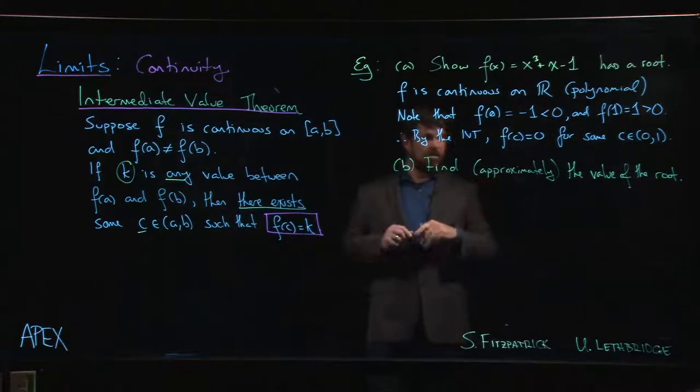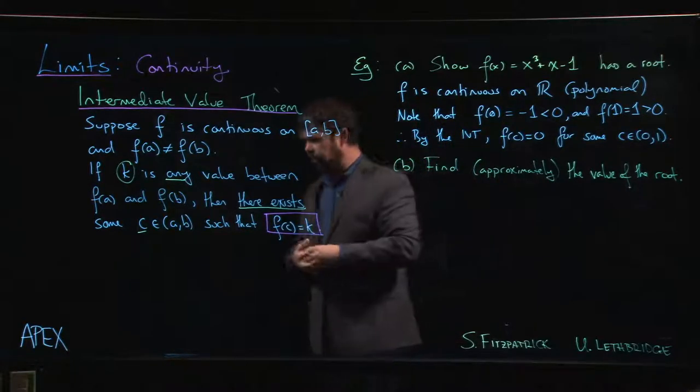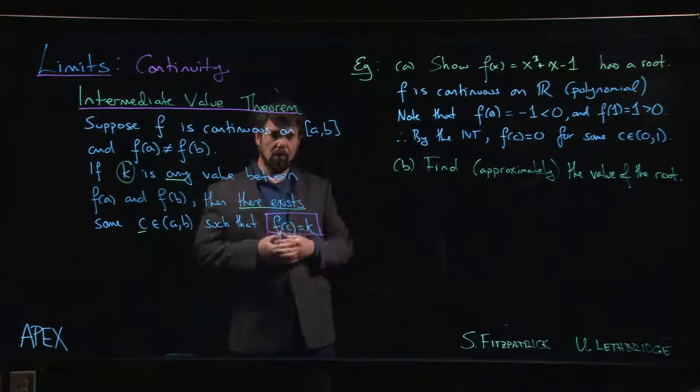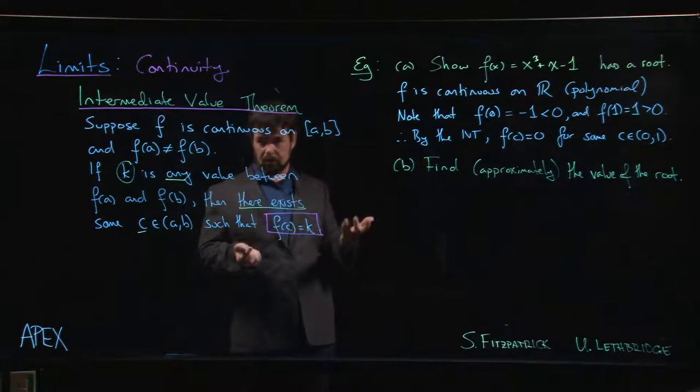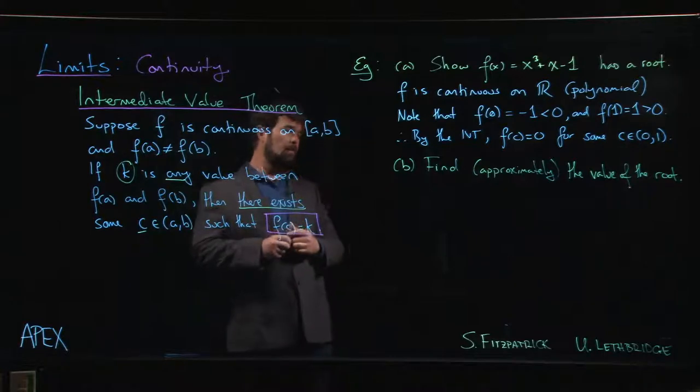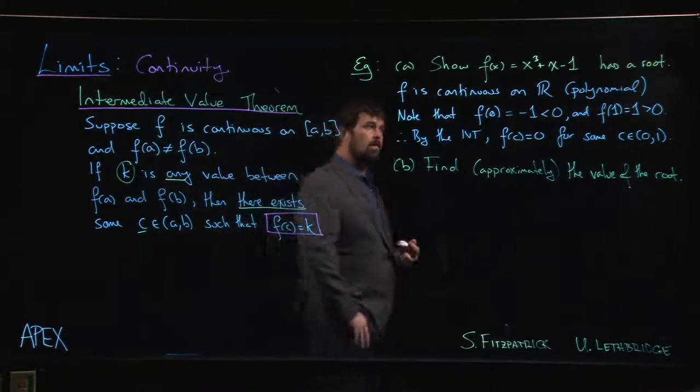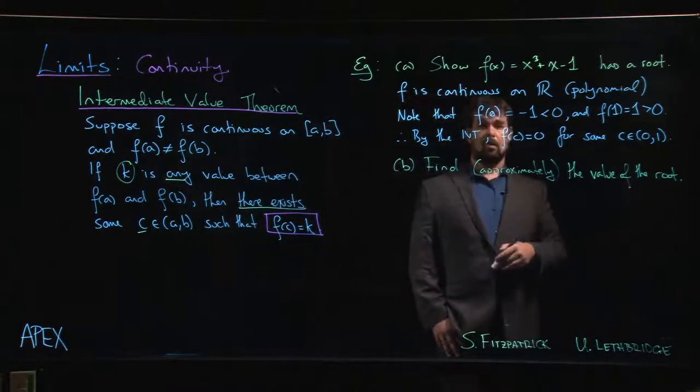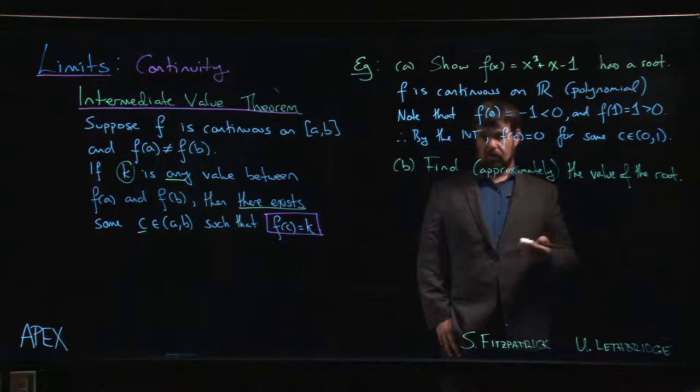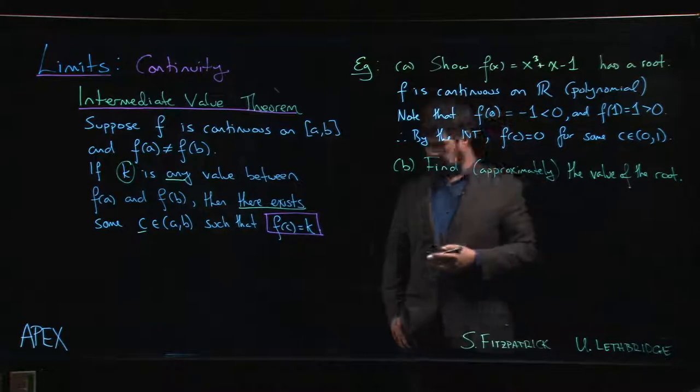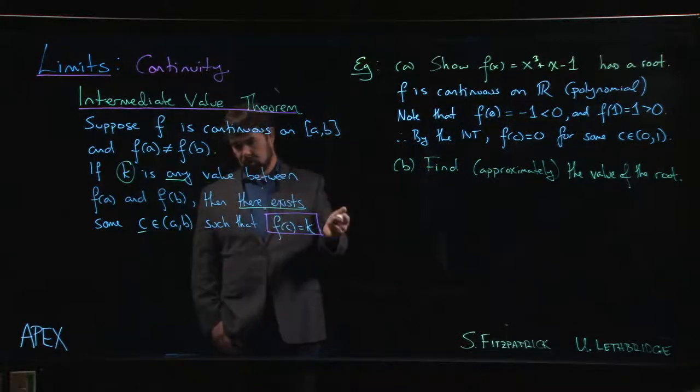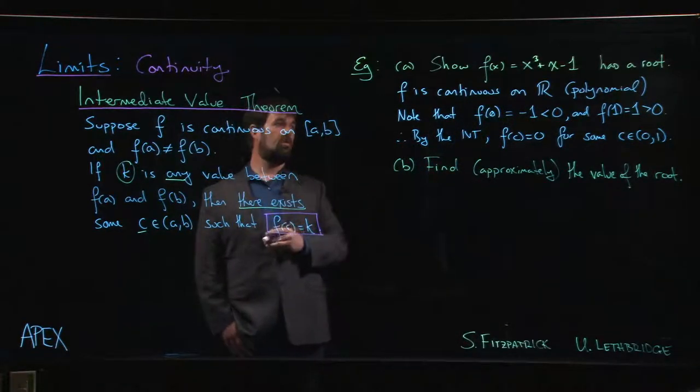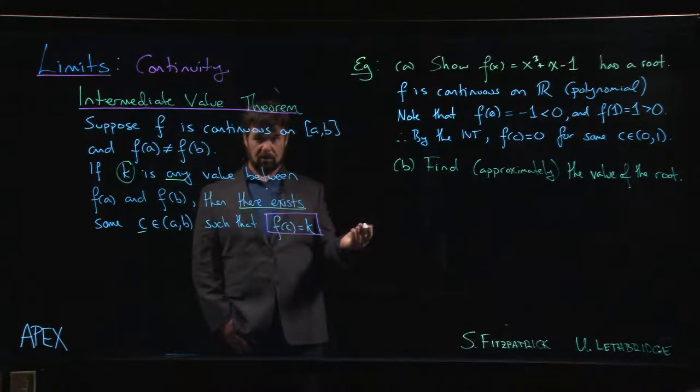And this c, we don't know what it is yet. It turns out this is actually the only root. Cubic functions could have as many as three roots. This one has only one. Once we've done a bit with derivatives, later on we'll encounter a result called Rolle's theorem when we're looking at derivatives. And Rolle's theorem says something about what happens when you have two roots for a function which is continuous and also differentiable.